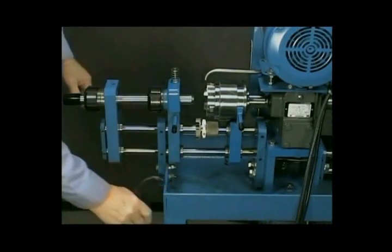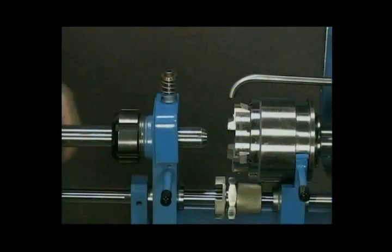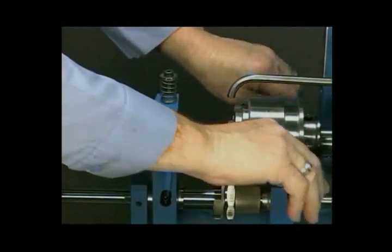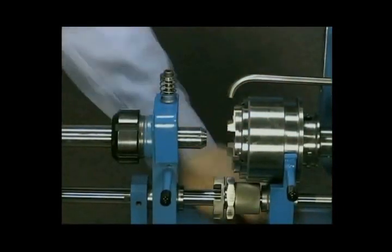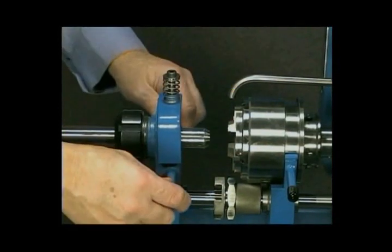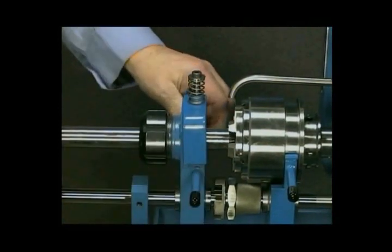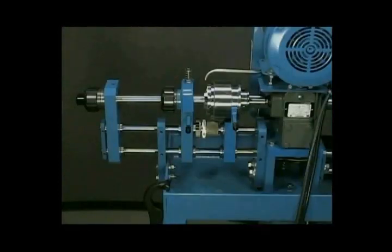Lock the die head closed by pulling forward on the two handles located on the die head trip yoke. Slide the collet assembly with tube forward carefully, until the cone of the tube touches the die chasers. The next step is to set the desired thread length.